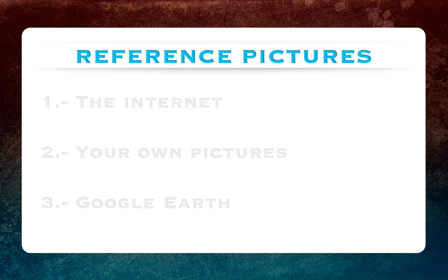Welcome back. In this lesson we are going to be focusing on getting the reference images that we need to create our scene. I have chosen the three best ways to get our references. Number one: the internet. The internet is full of pictures, sketches, drawings, and even paintings of buildings, homes, and basically anything you can imagine. All you have to do is use a search engine like Google or Yahoo and gather as many references as you need.